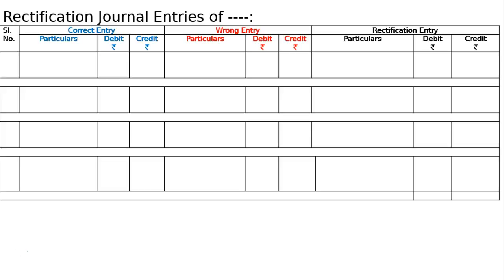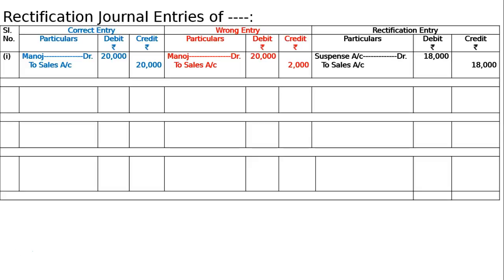The first problem: sales of ₹20,000 to Manoj were recorded as ₹2,000 in the sales book. The correct entry is Manoj debited to sales ₹20,000. The mistake was Manoj debited to sales only ₹2,000. There is a mistake in the amount of sales but no mistake in the sales account itself. Hence, write down 'to sales ₹18,000' — suspense account is debited to fill the gap of ₹18,000.